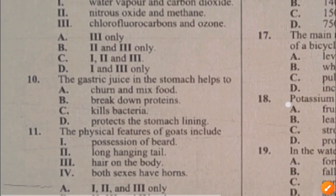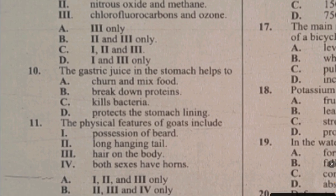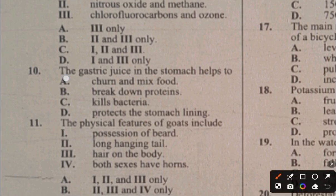Question 10. The gastric juice in the stomach helps to: A. Churn and mix food, B. Break down protein, C. Kill bacteria, D. Protect the stomach lining. The answer to question 10 is B, it breaks down proteins.